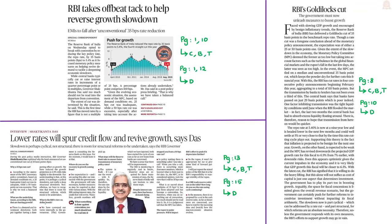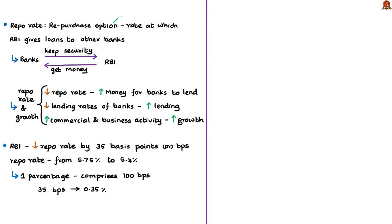We shall begin with recent monetary policy measures taken by the Reserve Bank of India, covering two news articles and one editorial. First, let us understand what is meant by Repo Rate. The term Repo Rate denotes the repurchase option. It is the rate at which the Reserve Bank of India, the Central Bank of India, gives loans to commercial banks. The commercial banks keep some security with the RBI, and the Repo Rate can also be defined as the rate at which banks buy back or repurchase these securities from the RBI at a later stage.